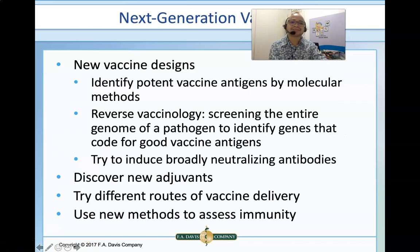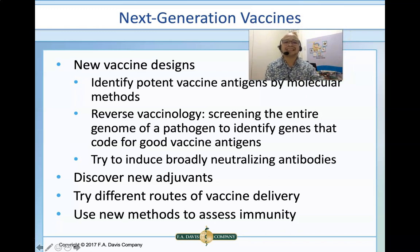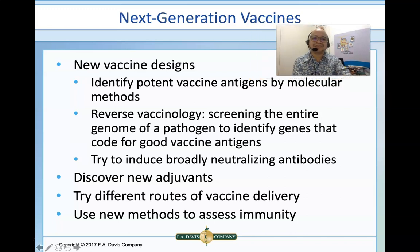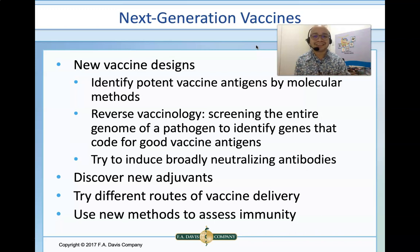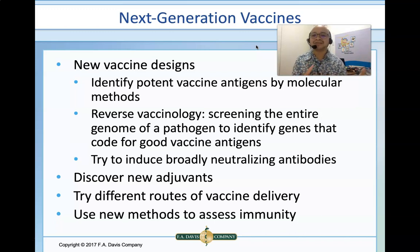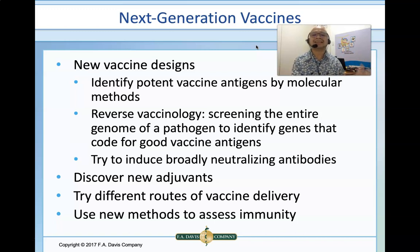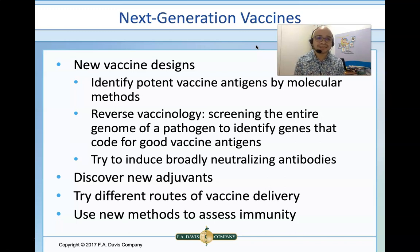Next-generation vaccines use new vaccine designs that identify potent vaccine antigens by molecular methods. They use reverse vaccinology — screening and sequencing the entire genome to identify genes that code for good vaccine antigens. This is what is being done for COVID-19: sequencing the entire genome of the virus to target specific genes. Next-generation approaches also involve discovering new adjuvants, trying different routes of vaccine delivery including bacteriophages, and utilizing new methods to assess immunity.